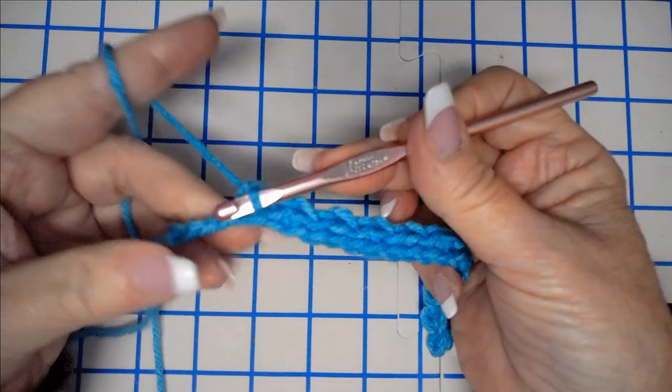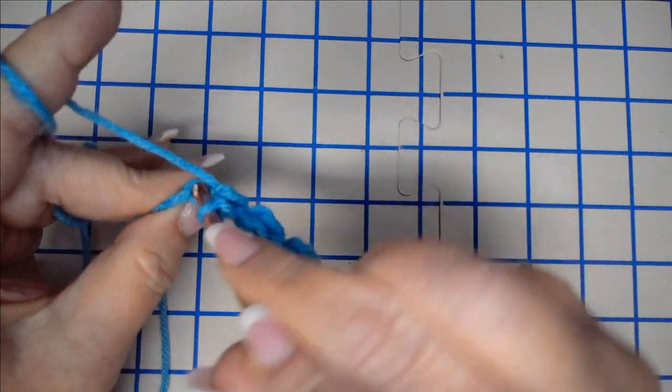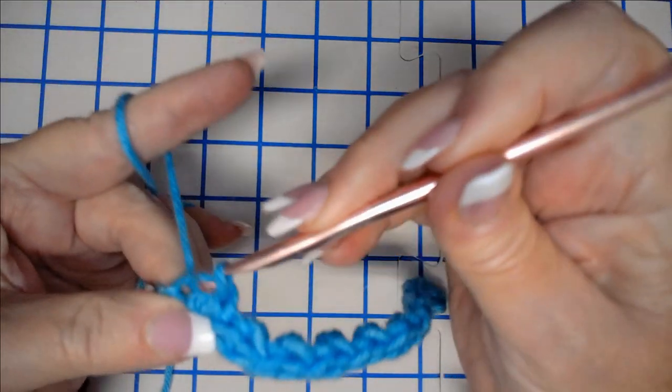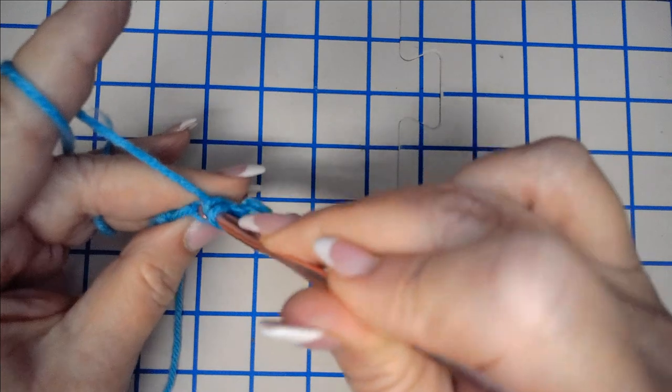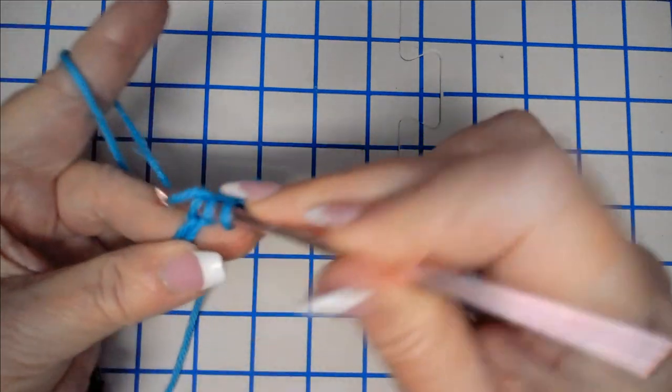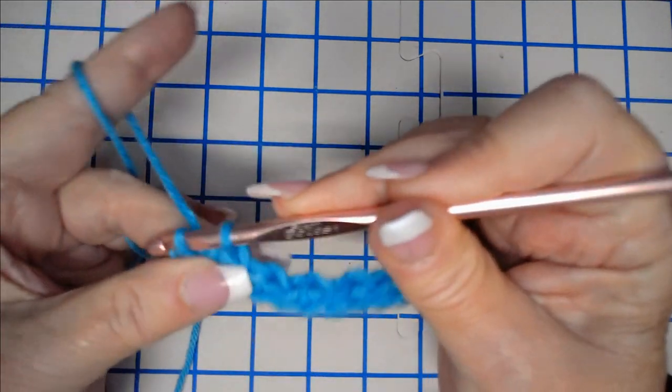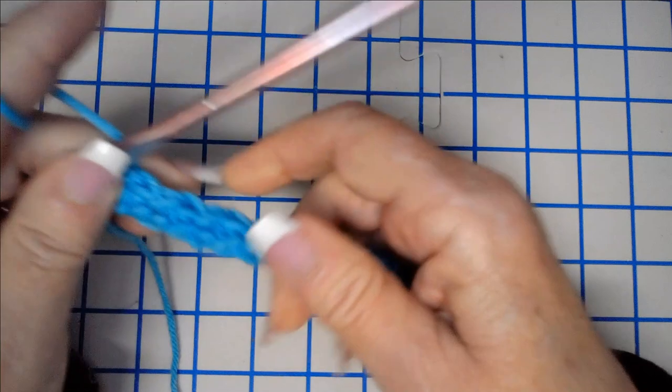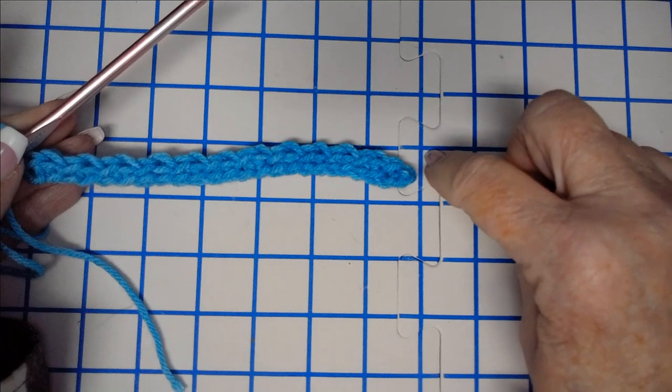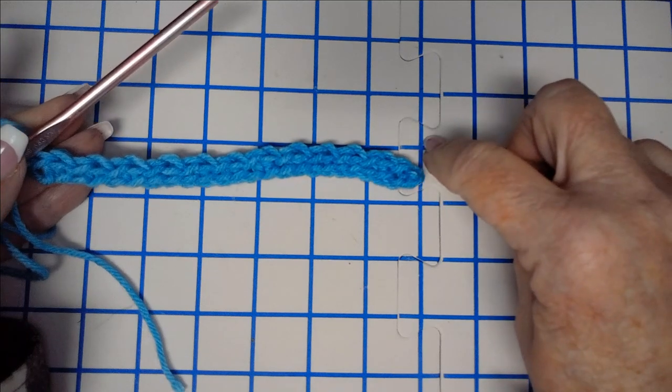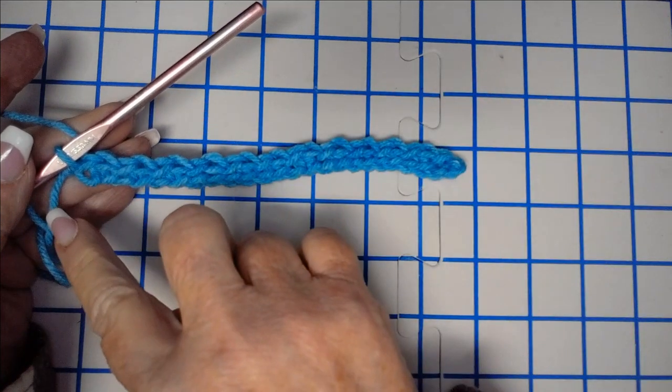All right, I'm coming down to the end of the row here. I just made a half double crochet, so I'm going to do a slip stitch. Half double crochet, and I'm going to end with a slip stitch. All right, and there you have it. Now, you're always going to start your rows with a chain two, and you're going to end your rows with a slip stitch. Start with a chain two, and end with a slip stitch.